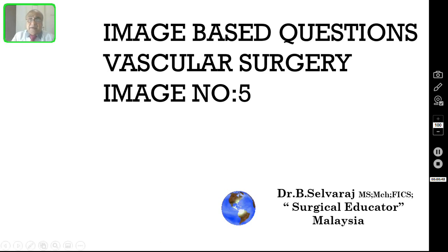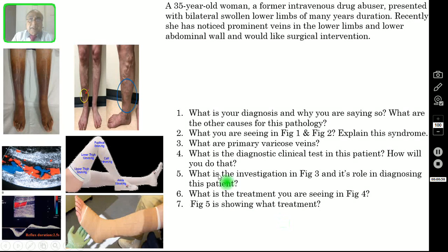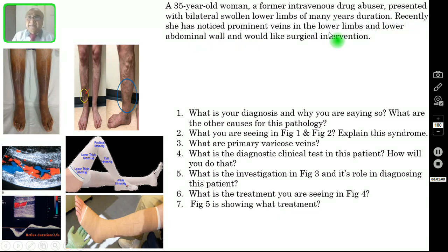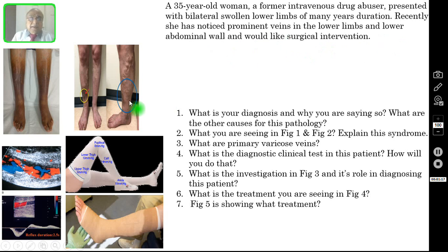This is image number 5. Our patient is a 35-year-old woman, a former intravenous drug abuser, presented with bilateral swollen lower limbs of many years duration. Recently, she has noticed prominent veins in the lower limbs and the lower abdominal wall and would like surgical intervention. This is the clinical scenario and these are the 6 pictures.